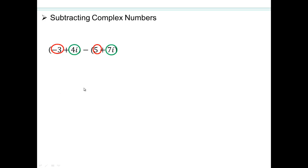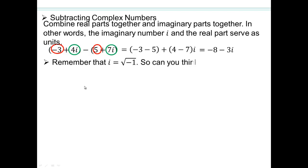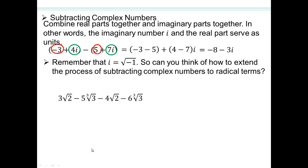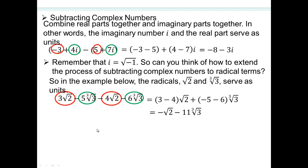Subtracting complex numbers we already saw. Take real parts and imaginary parts, do the subtraction and get the answer. i was square root of negative 1. Now let's extend our definition to radicals. Let's see if you can do that on your own. Like terms. 3 minus 4√2 and -5 minus 6∛3. 3 minus 4 is negative 1, so -1√2 and -11∛3.